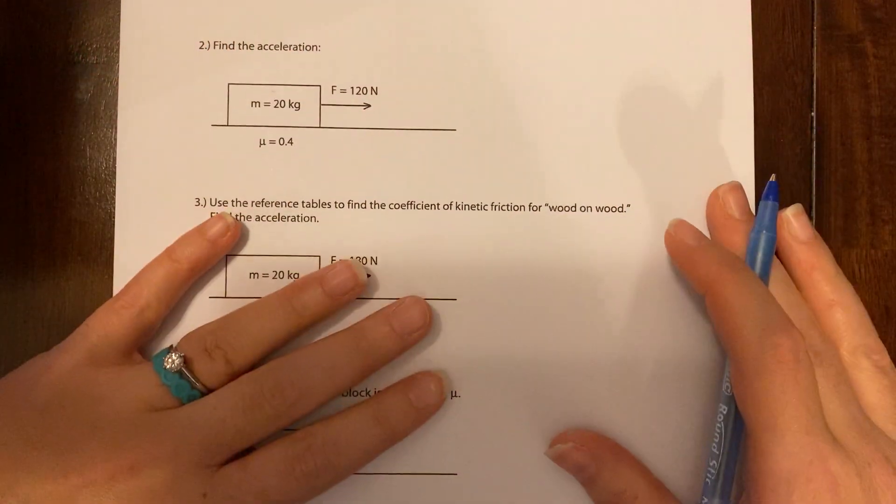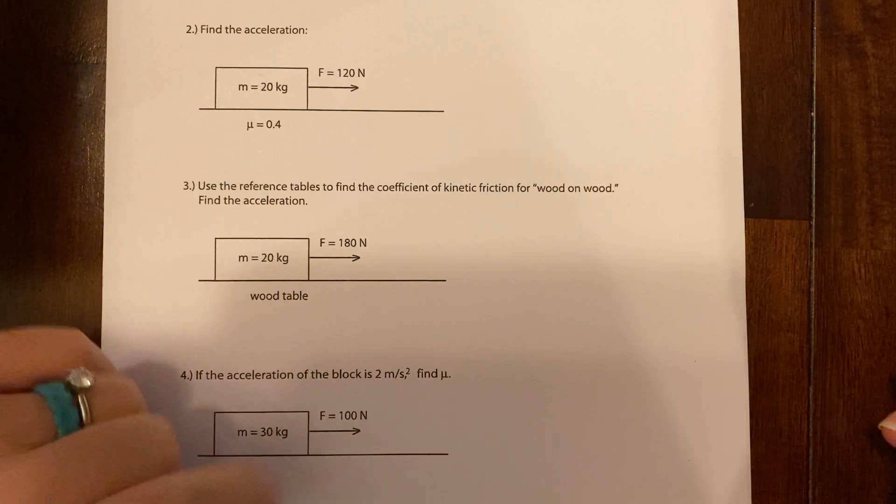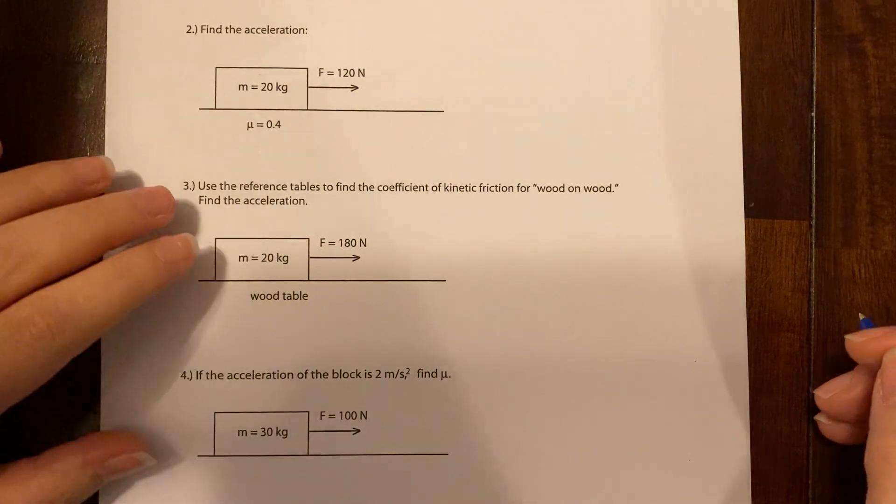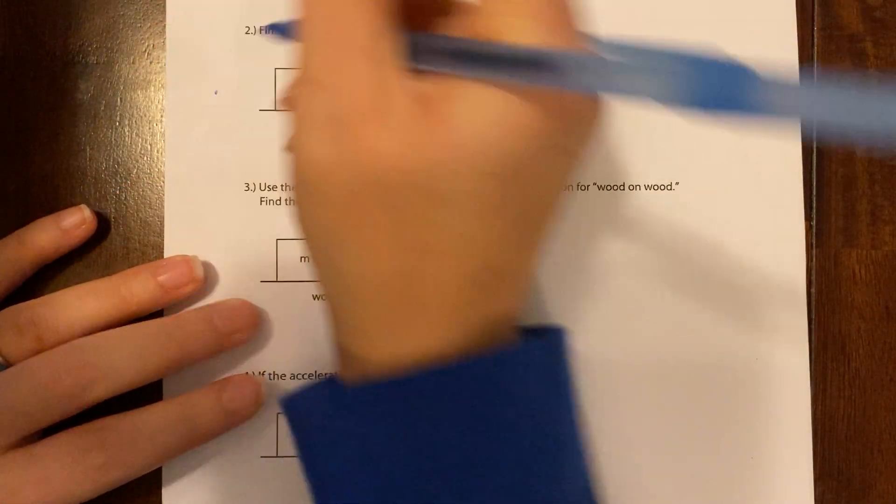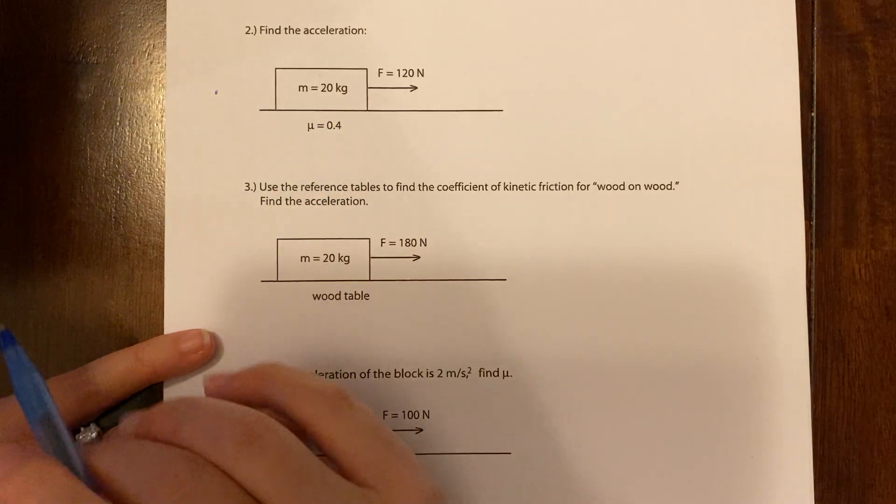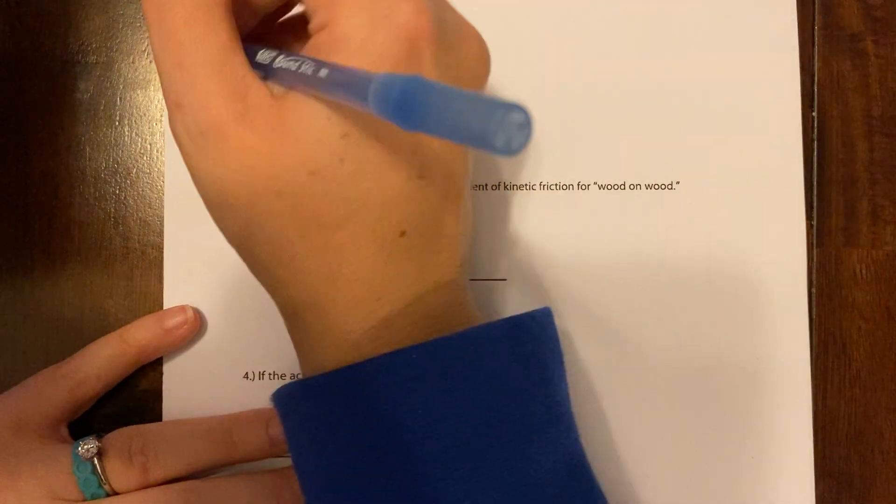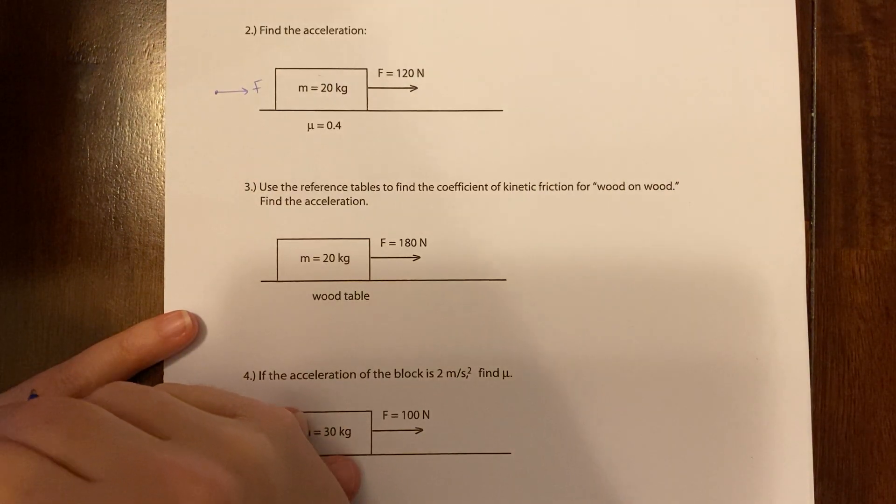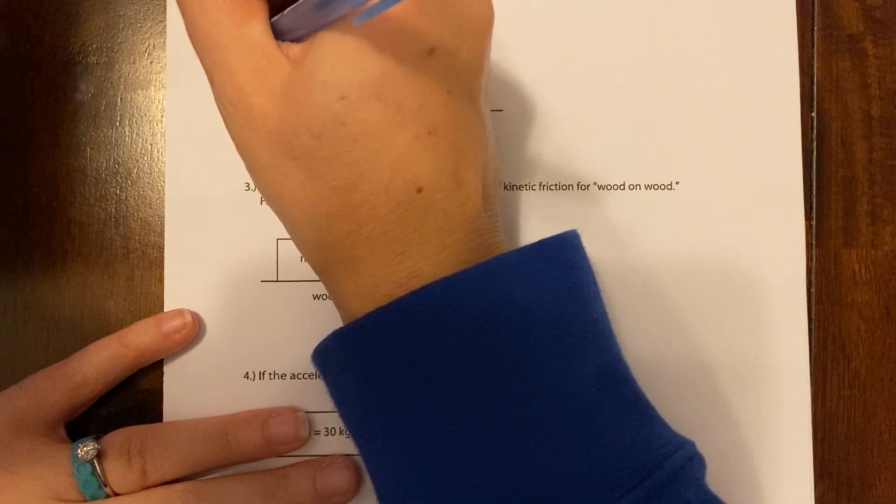Here we go. So the first step is to draw a free body diagram. I want to do problem number two first. Okay, so this one says find the acceleration. So first thing we're going to do is draw a free body diagram. We've taken, we've shrunken our box into a tiny little dot. What forces are acting in which direction? Well, there's a pulling force pulling to the right.